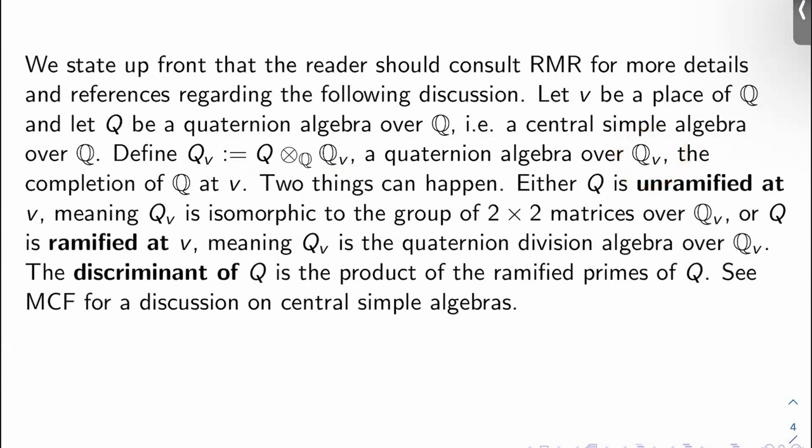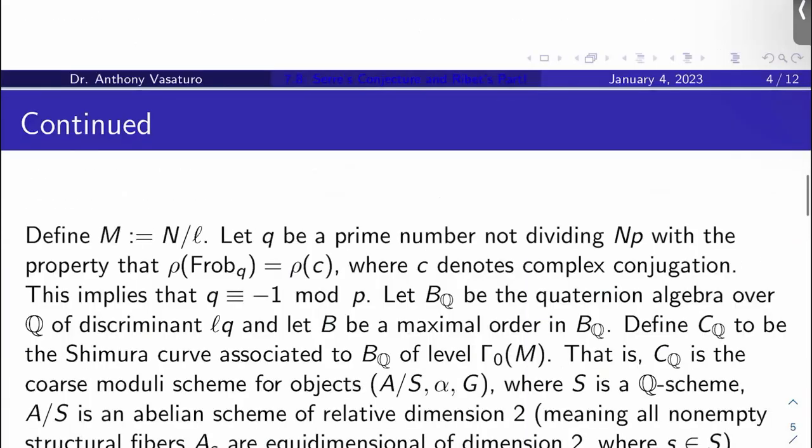Okay, two things can happen. Either Q is unramified at v, which means Q_v is isomorphic to the group of two by two matrices over the rationals completed at v, or Q is ramified at v, which means Q_v is the quaternion division algebra over the rationals completed at v. The discriminant of such a Q is the product of the ramified primes of Q. Okay, so you can see Milne's class field theory for an introduction to the idea of central simple algebras, but there are dedicated texts to this topic that you can find with a quick Google search.